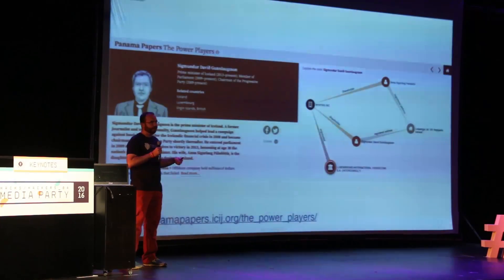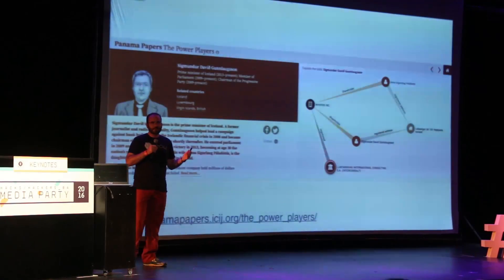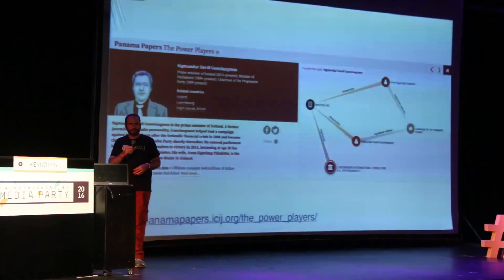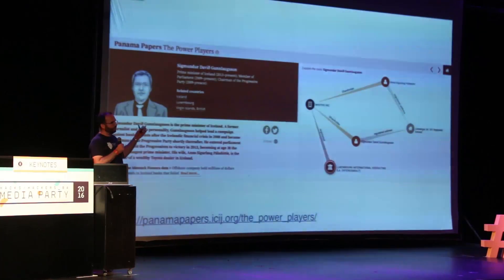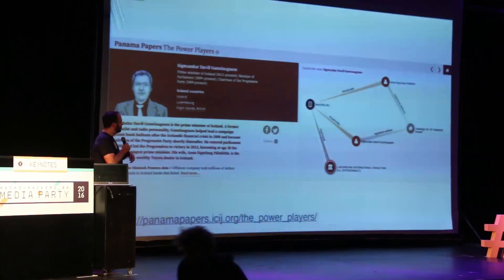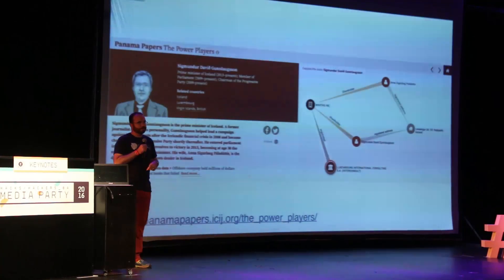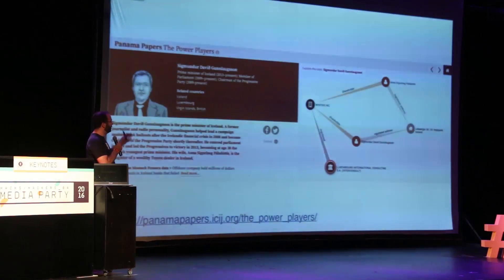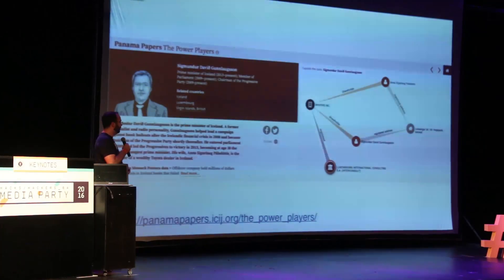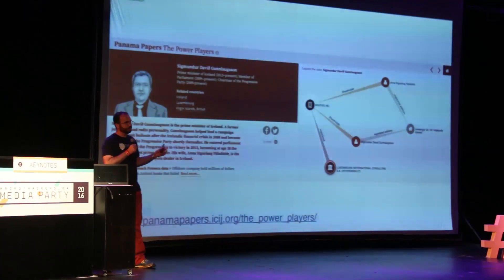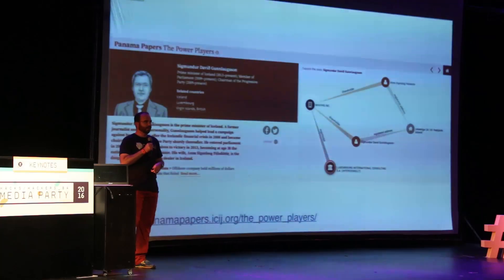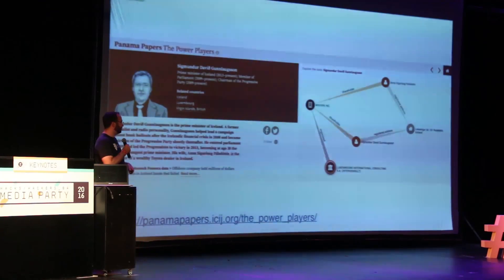What kind of data is connected? What kind of data can we model as a graph? As Mar talked about, we can model officers that have some controlling interest in companies and the addresses associated with them, and we can model that as a graph to help make sense of information like the Panama Papers.